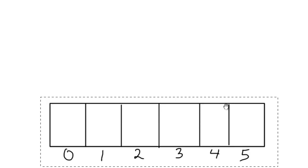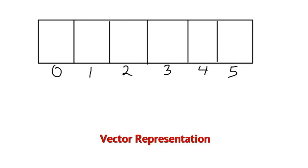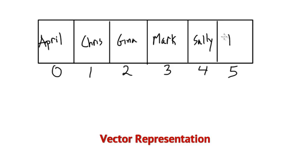Initially, we'll say that we have a vector of size six, and we have six contacts to fill it up. We have April, Chris, Gina, Mark, Sally, and Tom. These are all of our contacts. You can imagine that over time we make new friends and need to add new contacts. The way we have it ordered here is alphabetical — typically contact lists are ordered by first name or last name; in this case we only have one name to deal with.